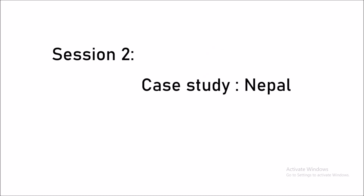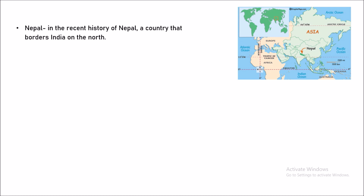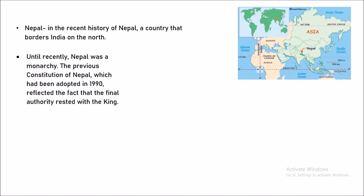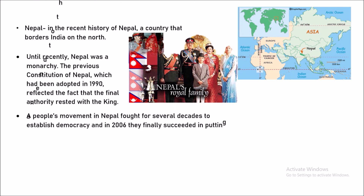Welcome to session two. In this session we will be looking at the case study of Nepal. Nepal in recent history has gone through so many political turmoils. Nepal is a country located on the borders of India, and until recently Nepal was having a monarchy. A people's movement in Nepal fought for several decades to establish democracy, and in 2006 they finally succeeded in putting an end to the powers of the king.